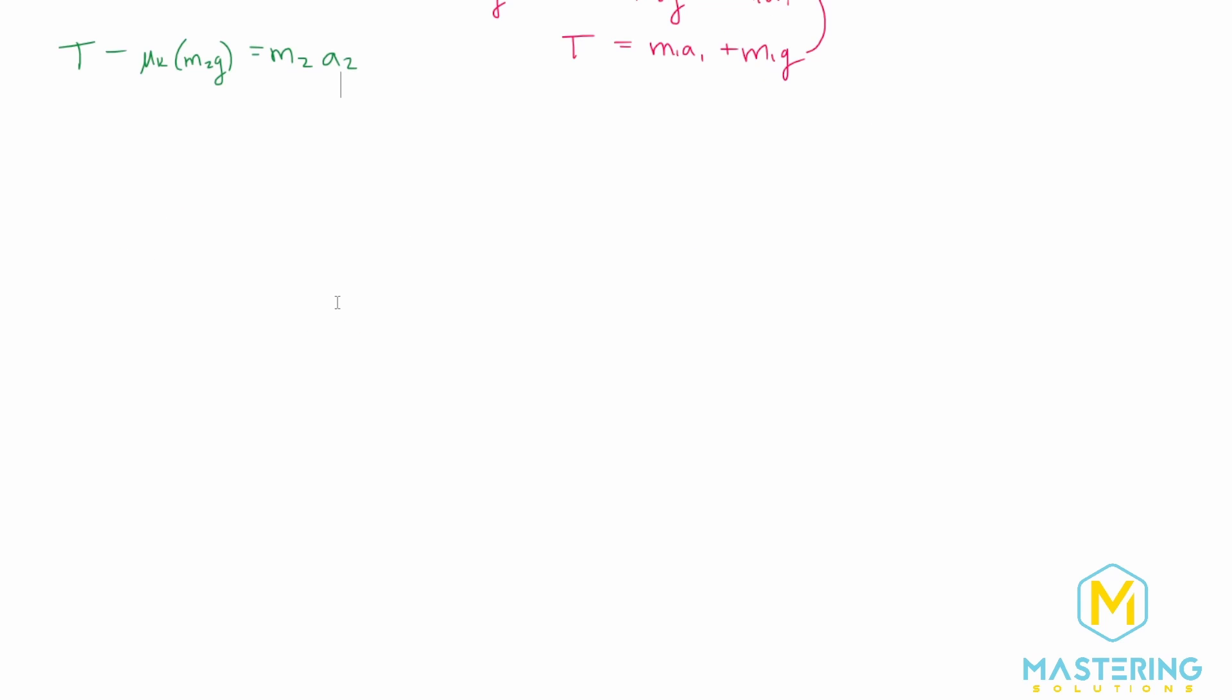So we have T minus mu sub k times m2 g is equal to m2 a2. All right so now this tension right here is coming over to this one. So we have m1 a1 plus m1 g and then the rest of the equation is the same: mu sub k times m2 g is equal to m2 times acceleration two.